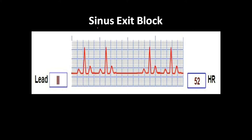Sinus exit block, as the name suggests, is a sinus rhythm. That's why we get a P wave, QRS complex, and a T wave — repeating. Then there will be a sinus exit block. If you look at this wave and this wave, there will be an isoelectric line which is a bit longer, showing there must be a P wave, QRS complex, and T wave which is missing.